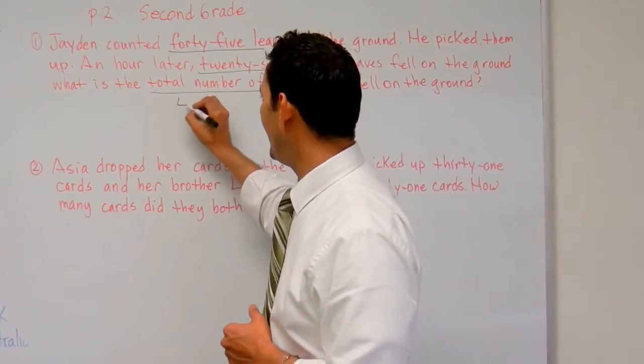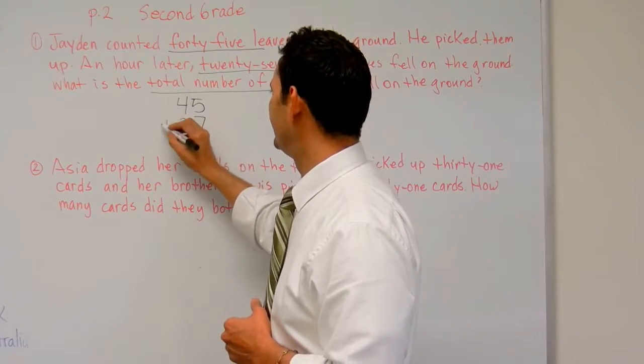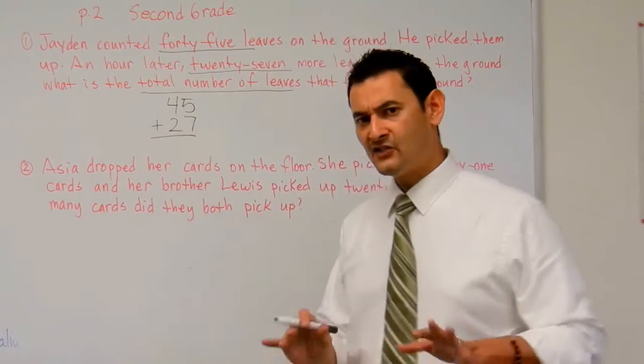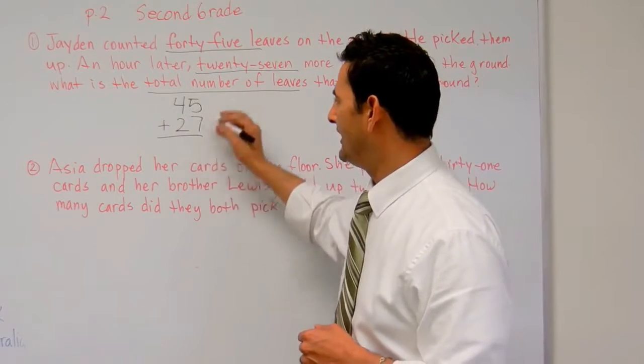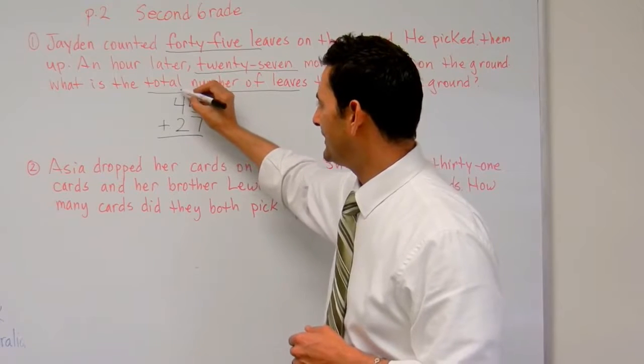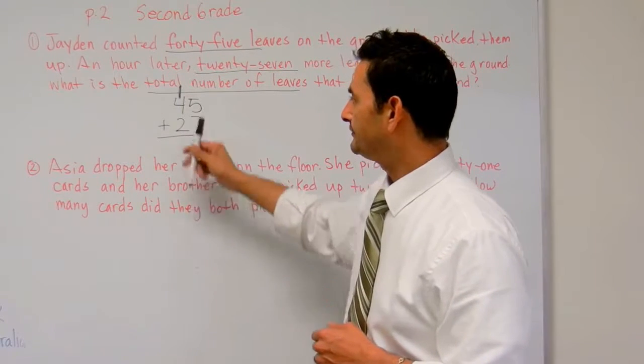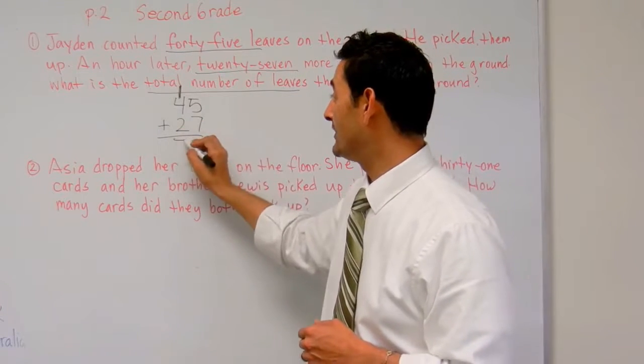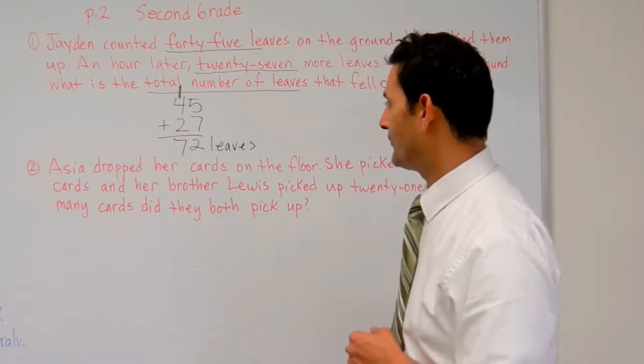So, here we have 45, and we have 27. Now, let's do it a couple ways, okay? So, here, we're going to add the ones, 5 plus 7, I know that's 12. I'm going to put a 1 there, a 2 there. 4 plus 2 is 6, plus 1 more is 7. So, we know that 72 leaves fell on the ground.